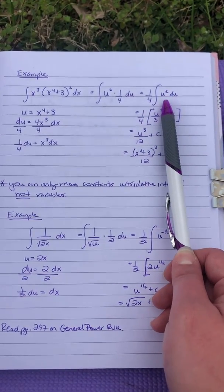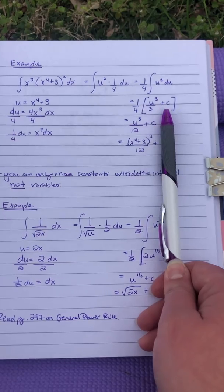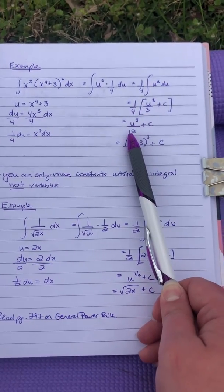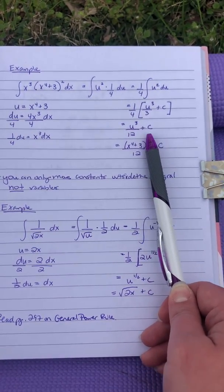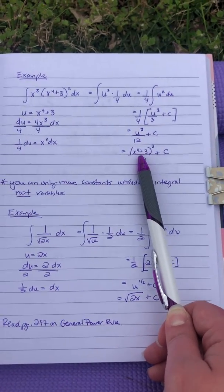So now you're going to take the antiderivative of u squared, which is u cubed over three plus c, multiply the one fourth. So it's u cubed over 12 plus c, and then you just replace the u back with the x to the fourth plus three.